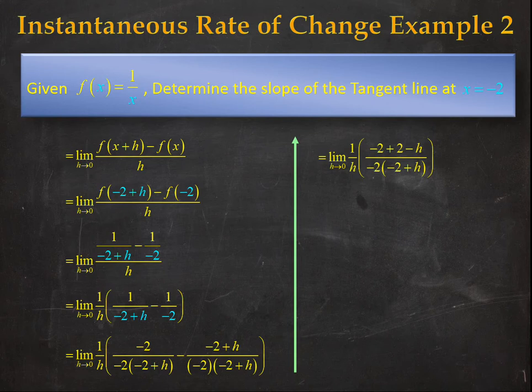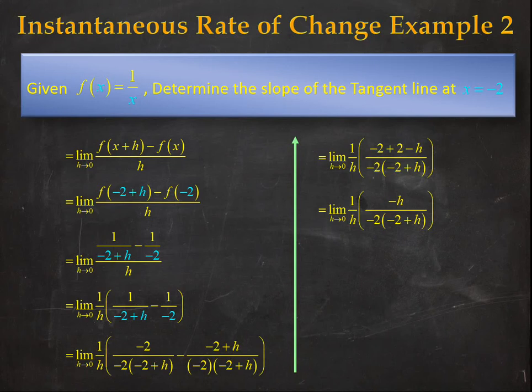We can rearrange and simplify and because we have an h on the top and an h on the bottom and h goes to 0, this is an indeterminate form. In fact, if you substituted minus 2 in for x at every step you always had an indeterminate form. We're at a location where we've simplified and can actually remove that indeterminate form by cancelling out our h's.